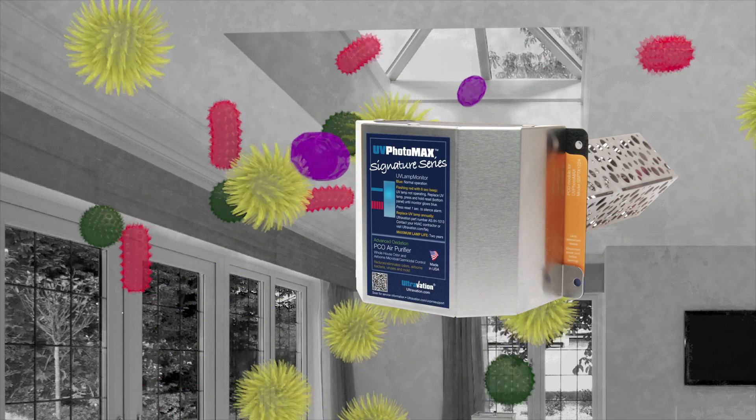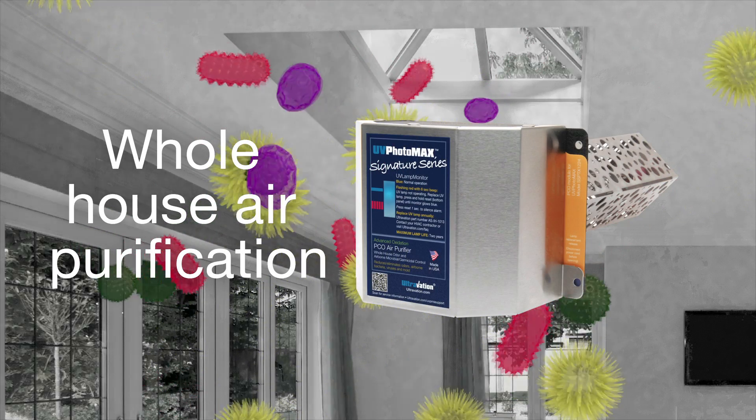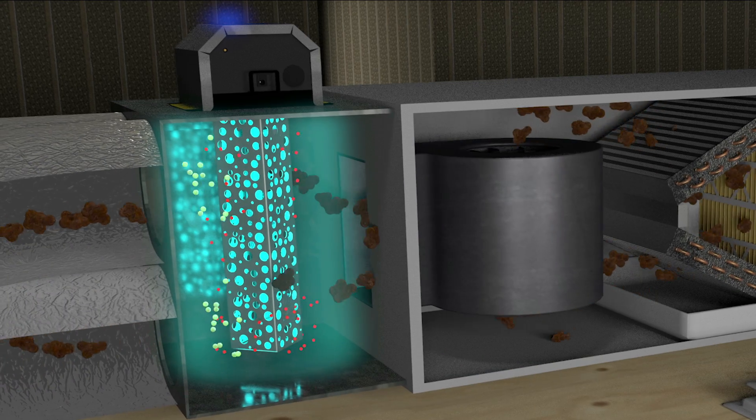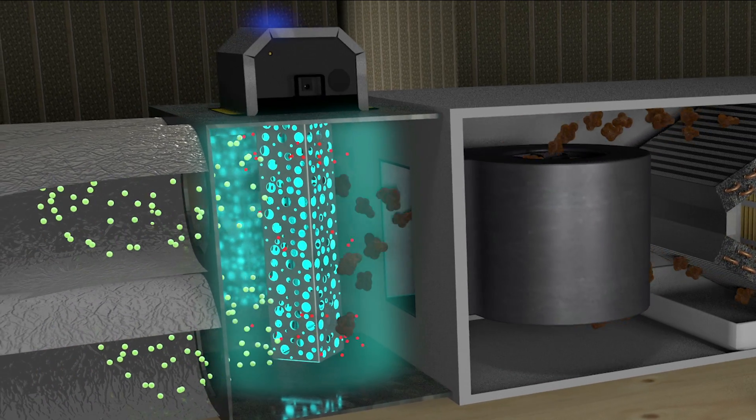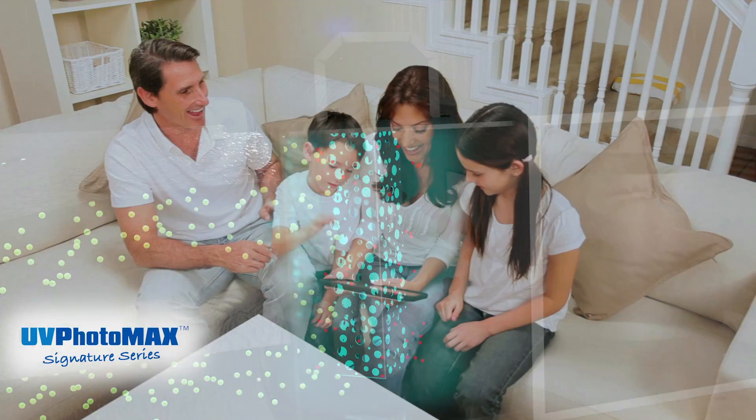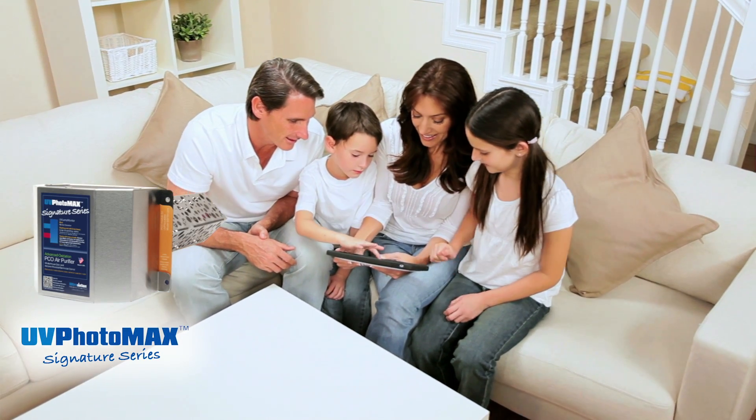UV Photomax is a unique whole house odor reduction and air purification system that freshens the air by removing contamination that no filter can. UV Photomax for cleaner, safer air and a healthier indoor environment.